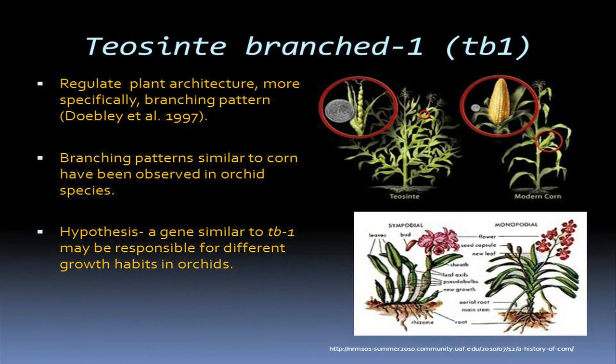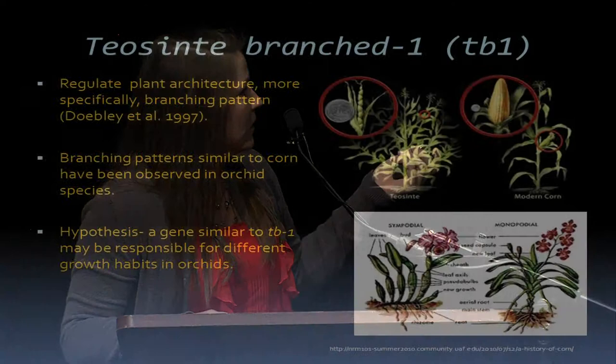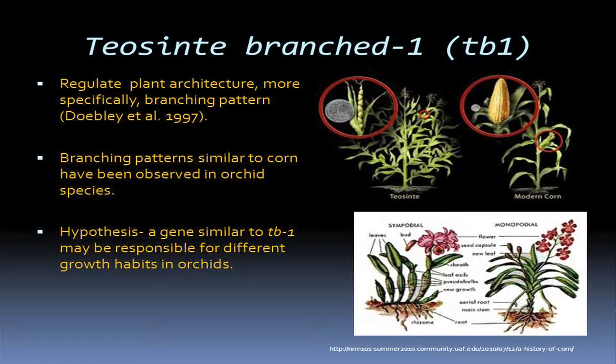First, Teosinte branched 1 — it regulates plant architecture, and more specifically the branching pattern. There are similar branching patterns in corn and orchids. In this picture, we have the ancient corn called teosinte, which exhibits sporadic branching, and on the right is our modern corn with a single stem with stalks coming off the sides. The same can be seen in orchids — similar to modern corn, a single stem with flowers coming off the sides. Similar to teosinte would be sympodial, which has many branches with flowers coming off. We hypothesized that there is a gene similar to TB1 responsible for these different growth habits.